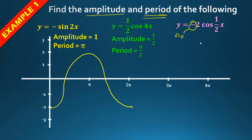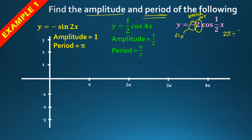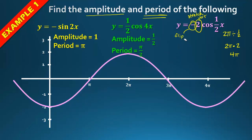The coefficient in front of x is ½. We take 2π divided by ½ — and when dividing by a fraction, we multiply by the reciprocal. So 2π × 2 = 4π. The period is 4π, meaning it takes twice the normal distance to complete one cycle.